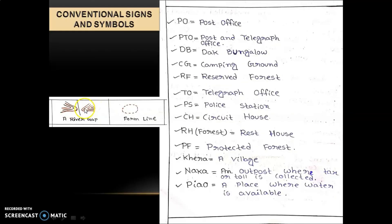A river gap is a low-lying depression or valley — a landform that is a low point or opening between hills or mountains, or in a ridge or mountain range. It may be called a col, notch, pass, saddle, water gap, or wind gap. The characteristic of a river gap is that a river flows through it.